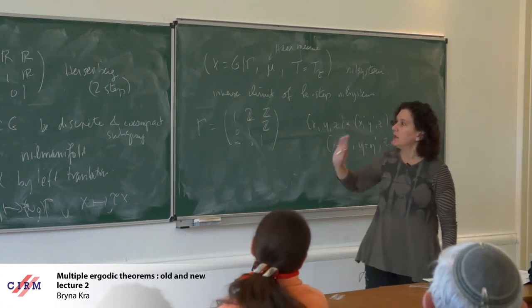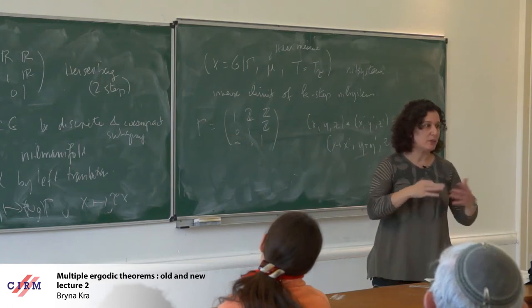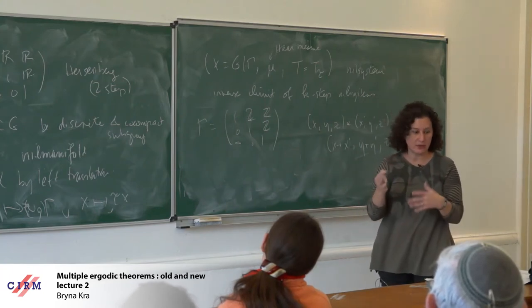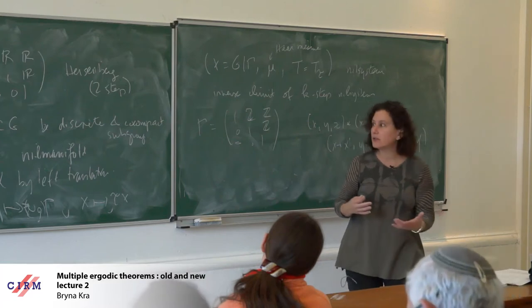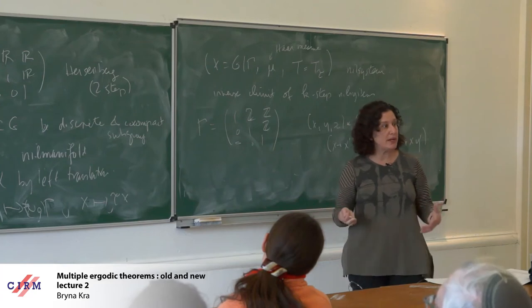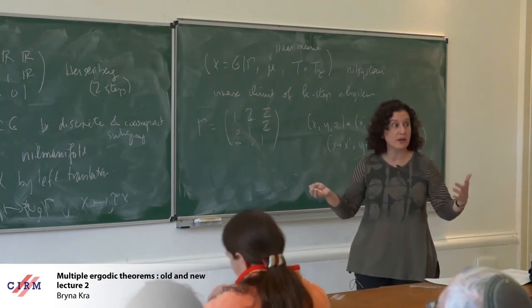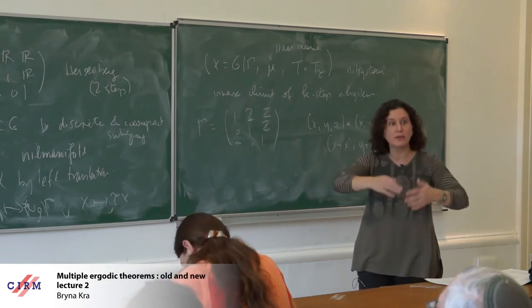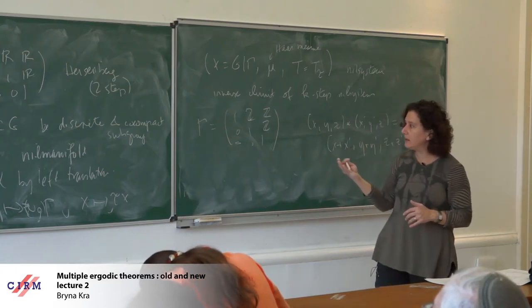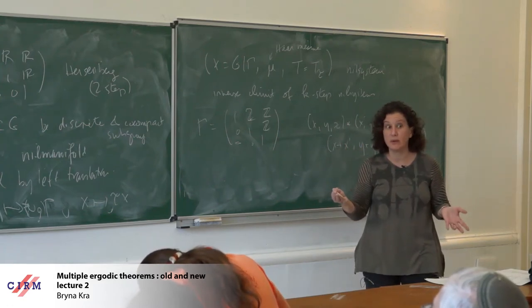Now I've defined the objects in the statement, but I want to give a different statement — a more modern version of this structure theorem. In the theme of structure and randomness that Marcus was talking about, the structure theorem tells you that there's a decomposition of an arbitrary measure space into a structured part — these inverse limits of nil systems, which are the generalization of the Kronecker factor — sitting above the Kronecker factor in a tower of factors.